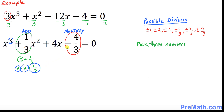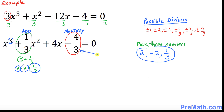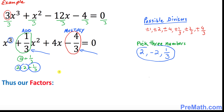Those three numbers we picked are 2, negative 2, and 1 third. If you multiply them you get negative 4 over 3, and if you add them you get 1 over 3. Now for the factors, put down three parentheses since we have three solutions.